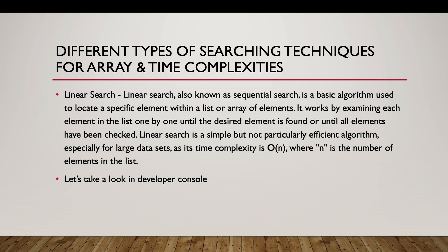Before going to binary search, let's discuss linear search. Linear search is also known as sequential search. It is a basic algorithm used to locate a specific element within a list or array of elements. It works by examining each element one by one until the desired element is found or until all elements have been checked. Linear search is not an efficient algorithm, especially for large datasets, as its time complexity is O(n), where n is the number of elements in the list.